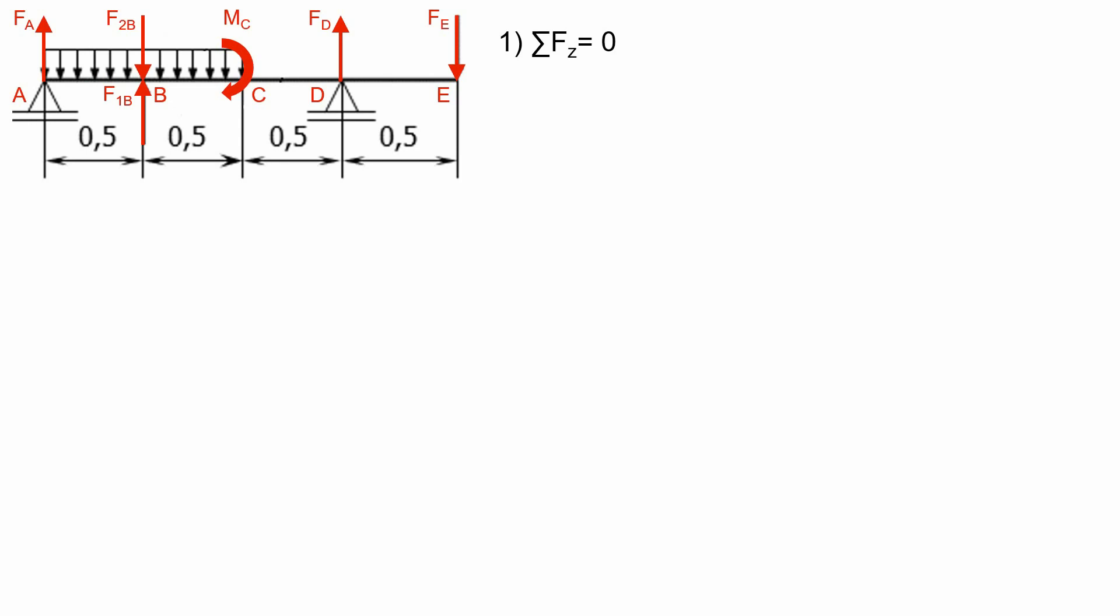We can notice that there is a uniformly distributed load of 6 kN per meter acting on 1 meter of the beam. So this will produce an equivalent force called F2B. To find out the value of this force we multiply the value of the load applied and the length of the beam on which the load is applied on. After solving the first equation we will get the mathematical relationship between the two roller support specific reactions FA and FD.